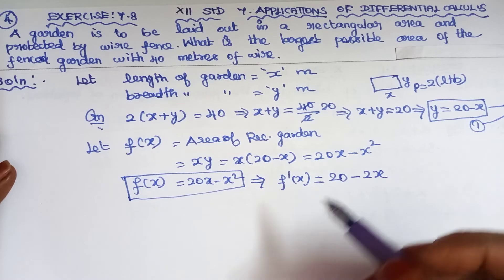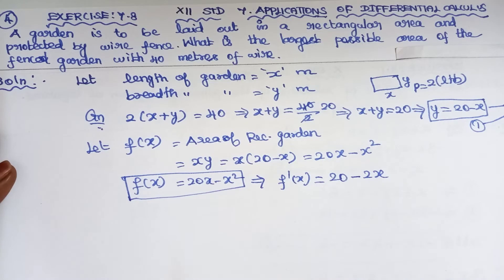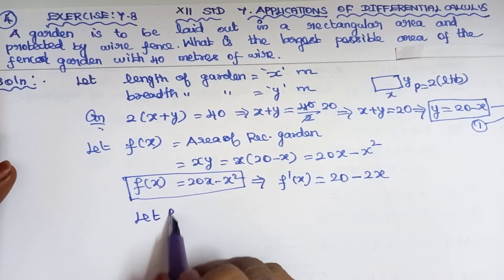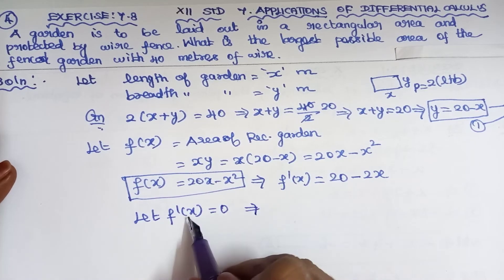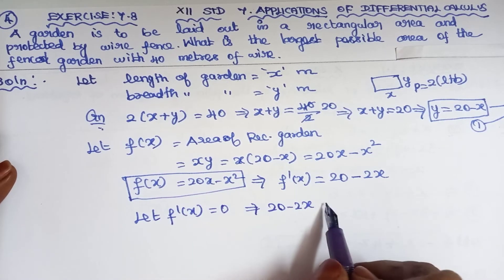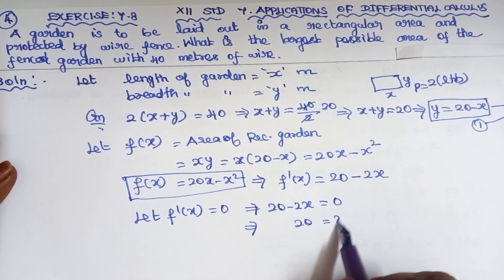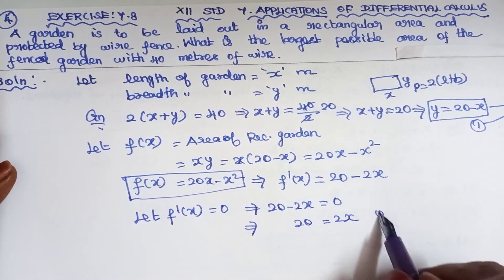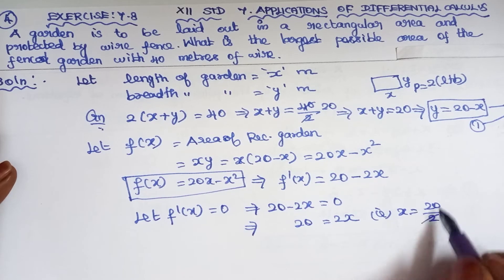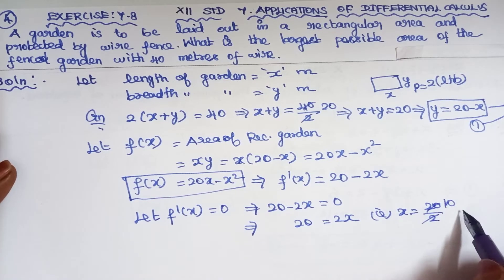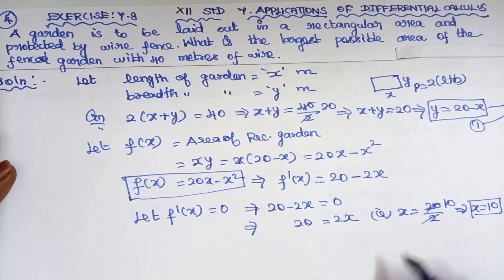To find the critical number, set f dash of x equal to 0. So 20 minus 2x equals 0, which simplifies to 20 equals 2x, giving x equal to 20 by 2, therefore x equals 10.